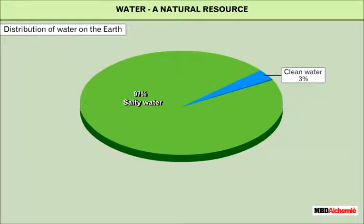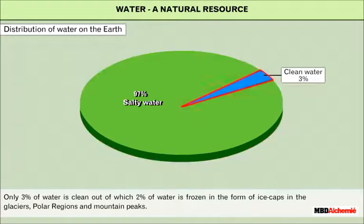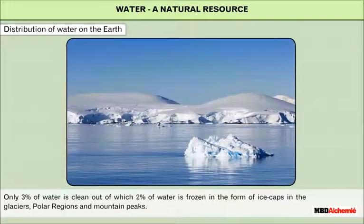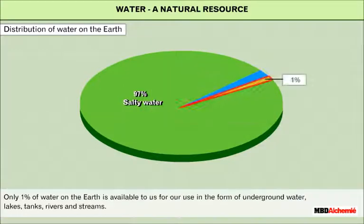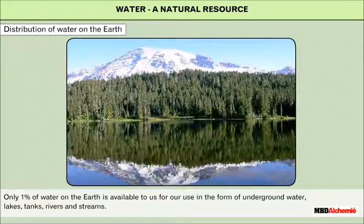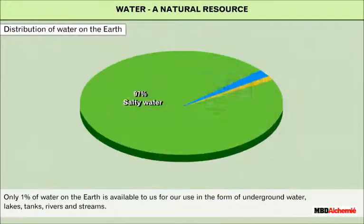About 97 percent of water on the earth is salty and is present in the oceans and seas. Only three percent of water is clean, out of which two percent of water is frozen in the form of ice caps in the glaciers, polar regions, and mountain peaks. Only one percent of water on the earth is available to us for our use.